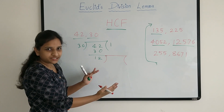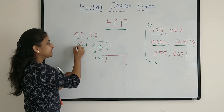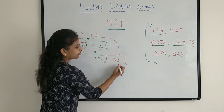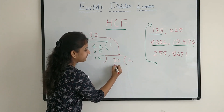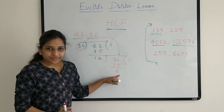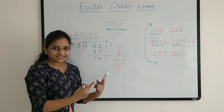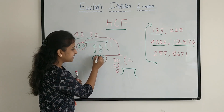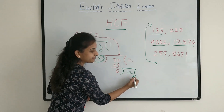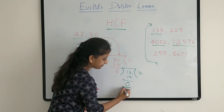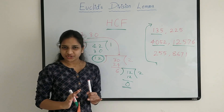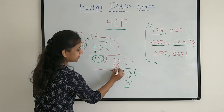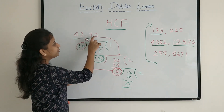Now I am doing the next division because my remainder is not 0. I am sending this divisor into the next division. The quotient is 2 and I get remainder as 6. Again remainder is not 0, so we should go for the next division. In the next division, we send this divisor inside. Now quotient is 2 and remainder is 0. We got remainder as 0, so we stop the process. The HCF of these two numbers is the last divisor — 6. So HCF of 42 and 30 is 6.